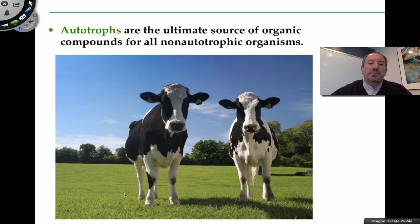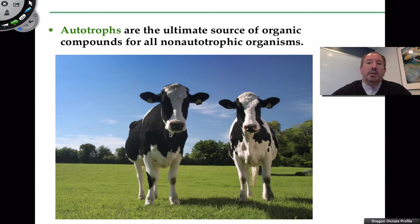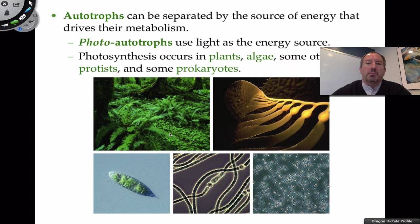Autotrophs are the source of organic compounds for all non-autotrophic organisms as well. As a primary consumer, we get our carbon skeletons to create all our organic molecules by eating. So photosynthesis is the base of our source of energy, and it is the base of our source of carbon so that we can create all organic molecules — very, very important.